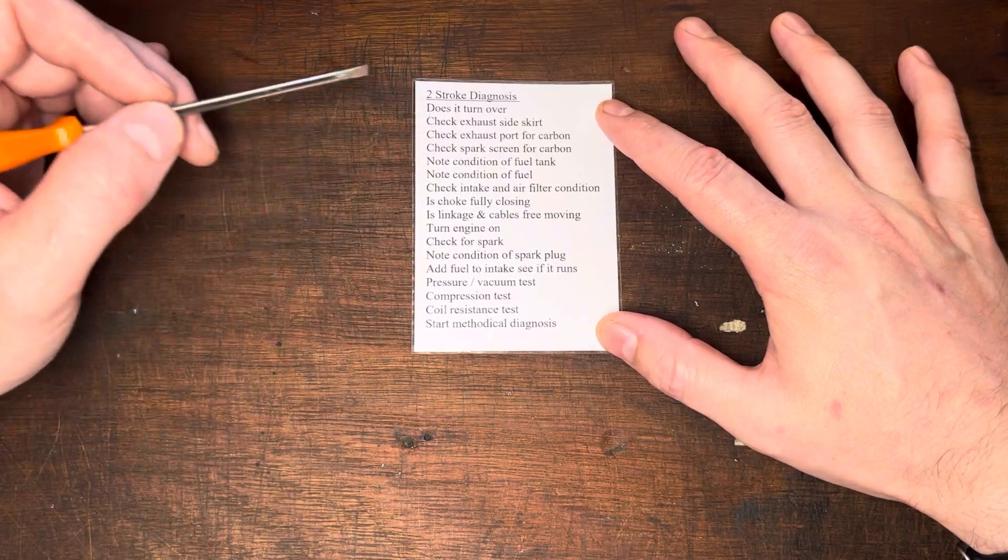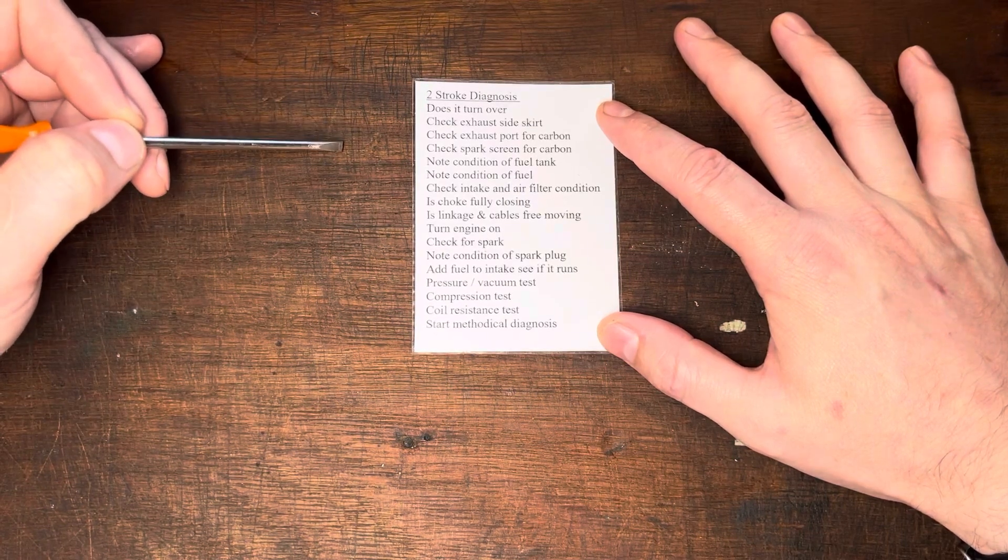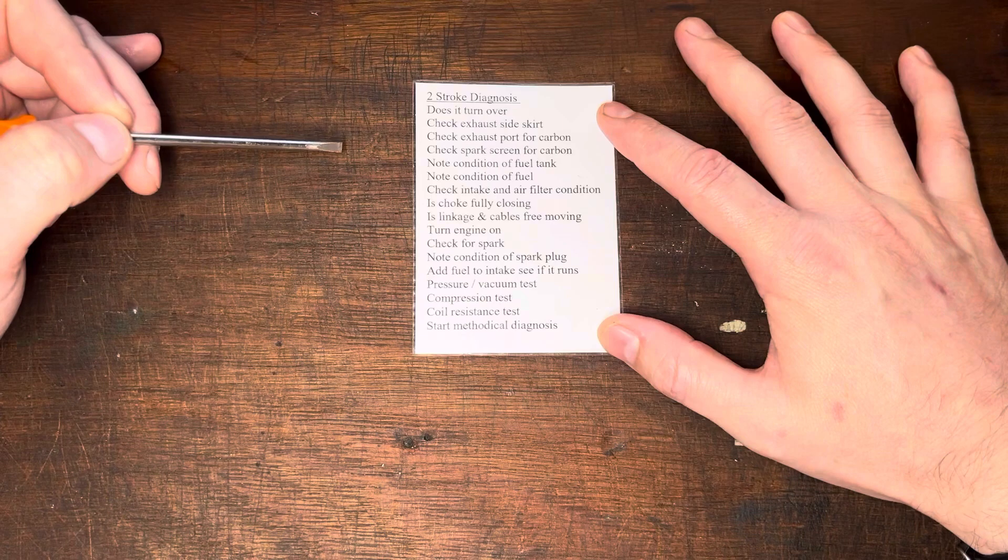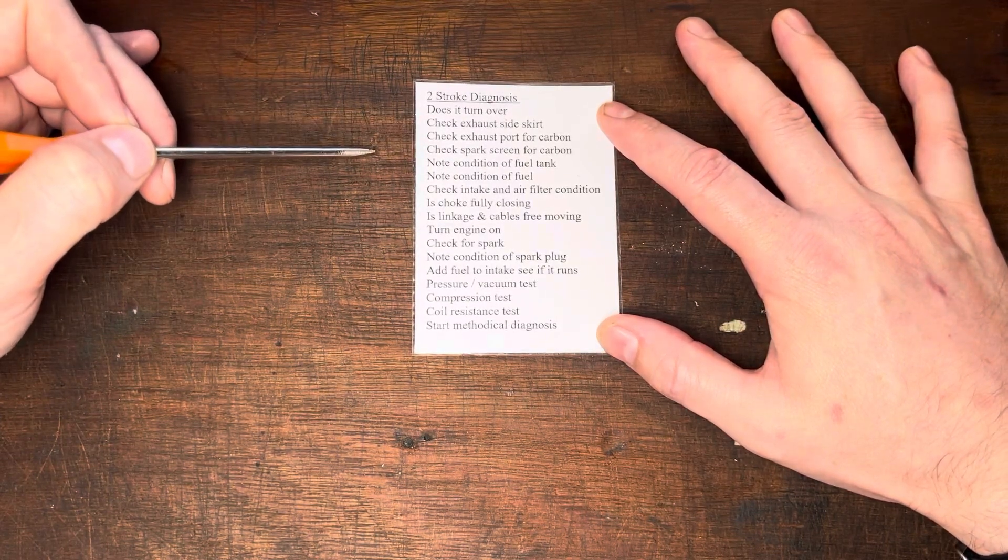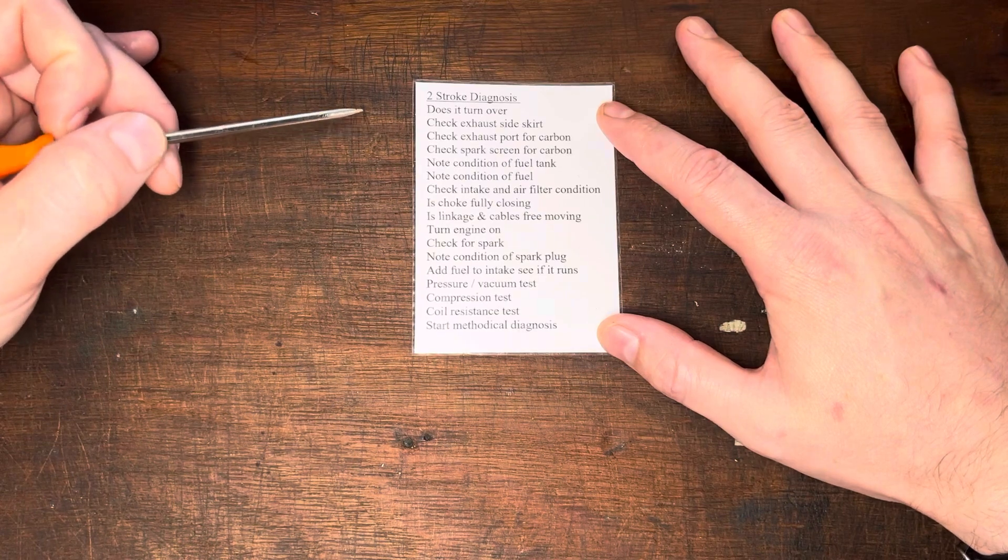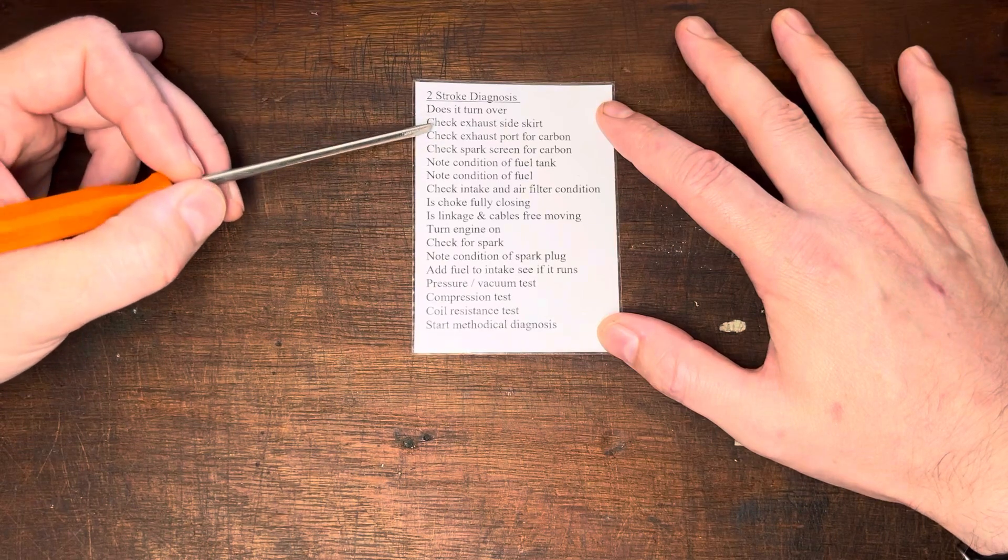And in fact that takes us on to exhaust port, checking it for carbon. Engines can actually still run with considerable blockages in the exhaust. However, you'll find that it might not run. If it does run, it might only idle and not reach wide open throttle. If it's there, it needs to be removed. At the very least, it's a restriction. At the very worst, it can dislodge and it can score a piston skirt.